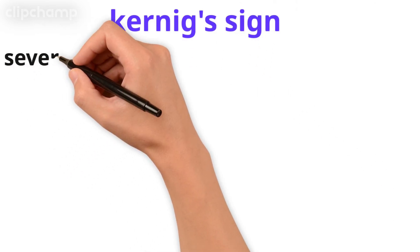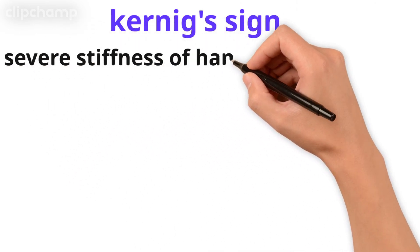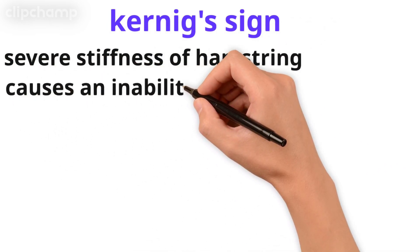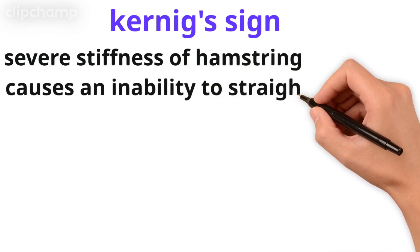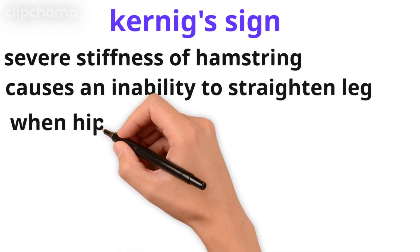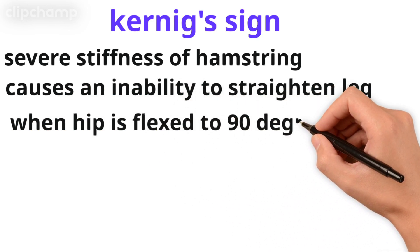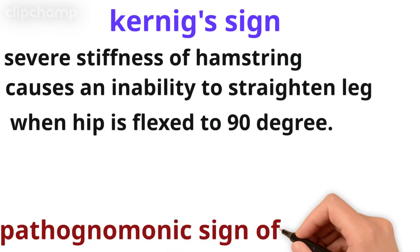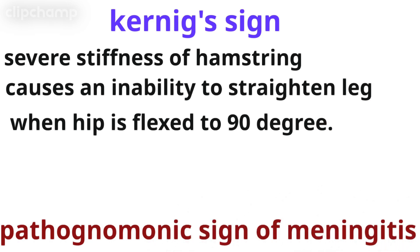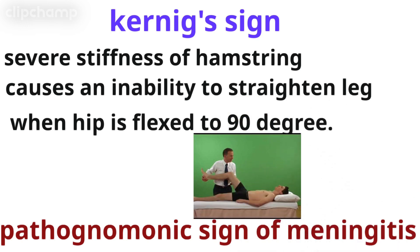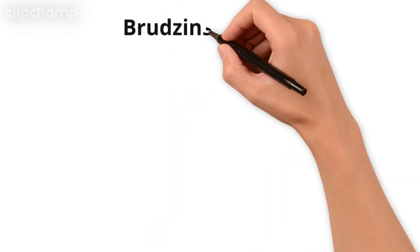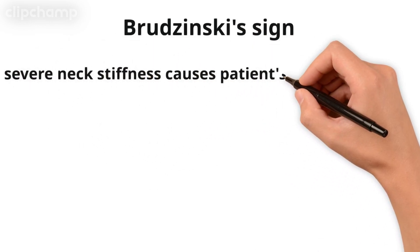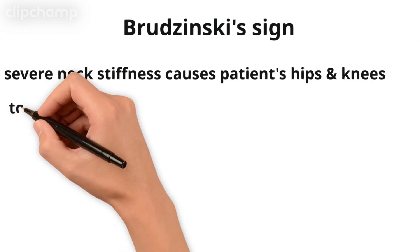Next is Kernig's sign. It is actually severe stiffness of the hamstring muscles causing an inability to straighten the leg when the hip is flexed to 90 degrees. When this sign is positive, it means the disease is meningitis. It is the pathognomonic sign of meningitis. Here you can see Kernig's sign.